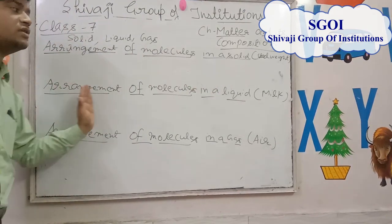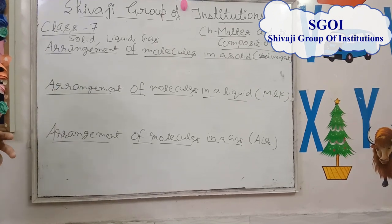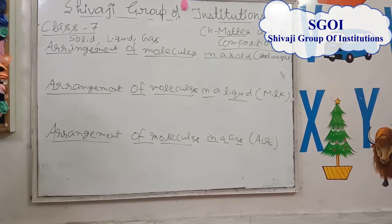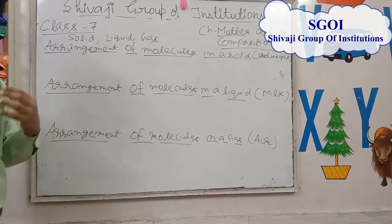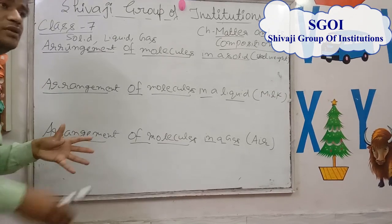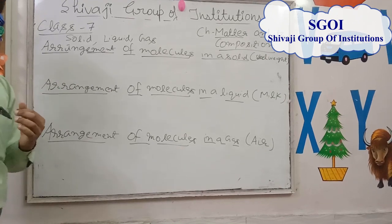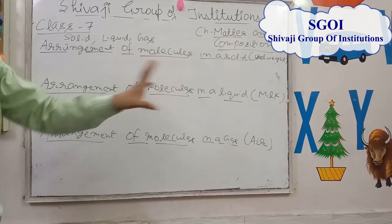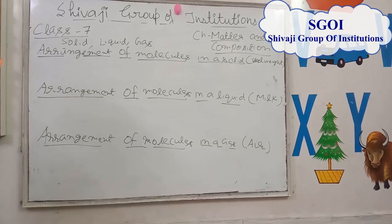Now we discuss the arrangement of molecules in the liquid state. We can take the example of milk. In liquids, the molecules are lesser tightly packed in comparison to solids. Because the intermolecular spaces are less in comparison to solids, the force of attraction between the molecules is less. Because of this, the molecules of liquids are not rigid and hard — they take the shape of the container in which they are filled.